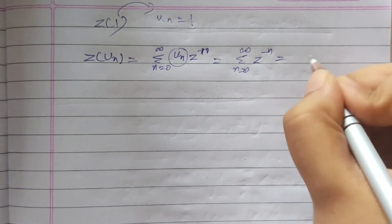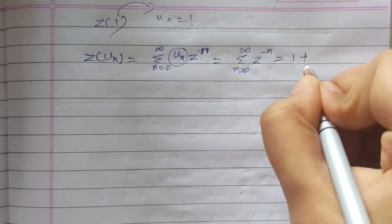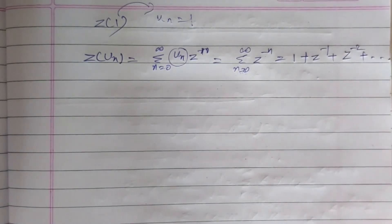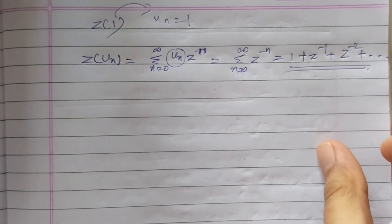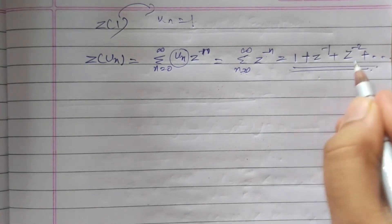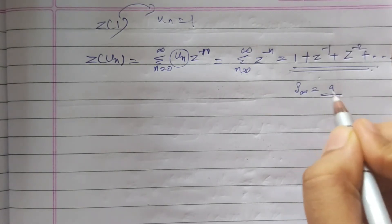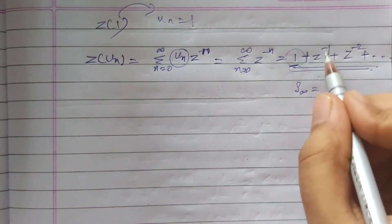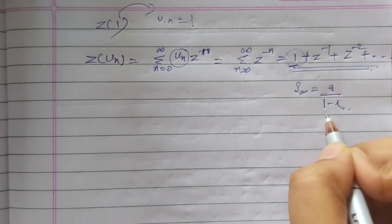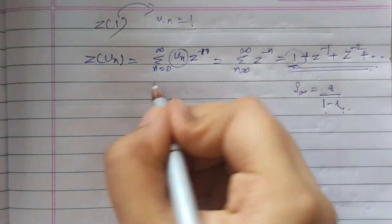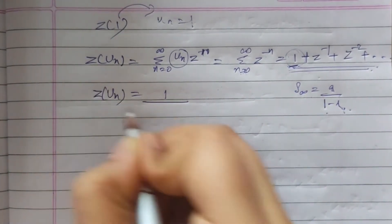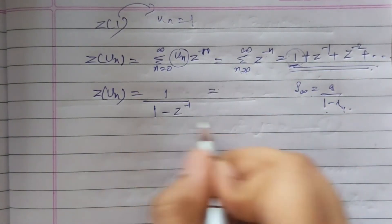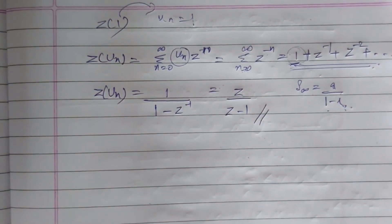Substituting values, we get z^0 = 1 when n=0, then z^(-1) when n=1, then z^(-2) and so on. We are getting a geometric progression (GP). For an infinite GP, the sum = a / (1 - r), where a is the first term and r is the common ratio. Here a = 1 and r = z^(-1), so Z{1} = 1 / (1 - z^(-1)). Taking LCM gives z / (z - 1).